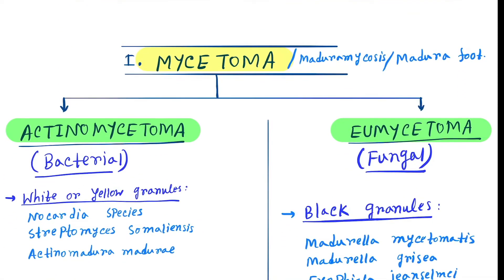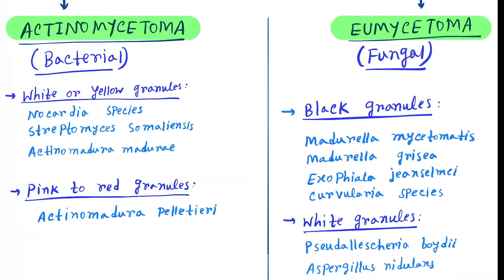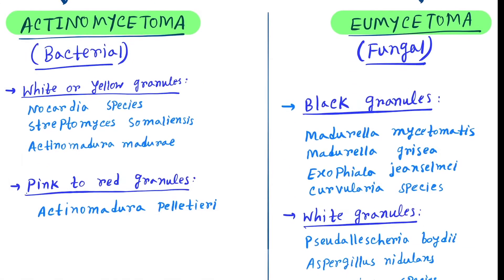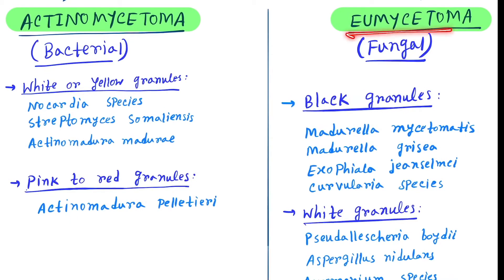The first one is mycetoma, also known as Madura mycosis and Madura foot. Actinomycetoma is bacterial and eumycetoma is fungal. In actinomycetoma, white or yellow granules are produced by Nocardia species, Streptomyces somaliensis, and Actinomadura madurae.